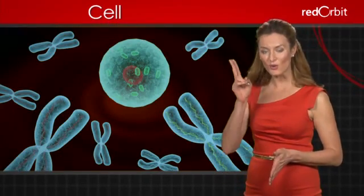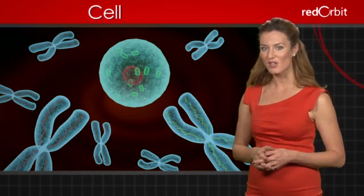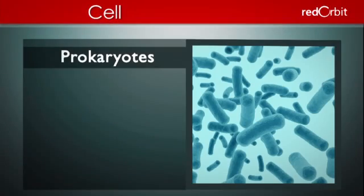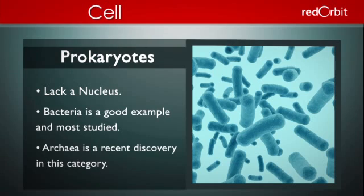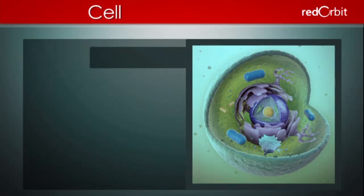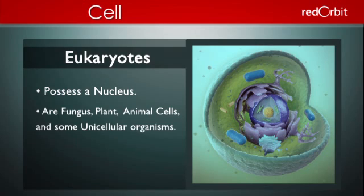The many different kinds of cells that exist can be divided into two main categories: prokaryotes and eukaryotes. Prokaryote cells lack a nucleus. Bacteria are the best known and most studied form of prokaryotic organisms. A recently discovered second group of prokaryotes, called archaea, also exist. Cells that do have nuclei are classified as eukaryotes. This includes fungus, plant and animal cells, as well as some unicellular organisms.